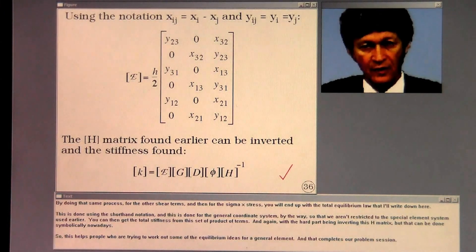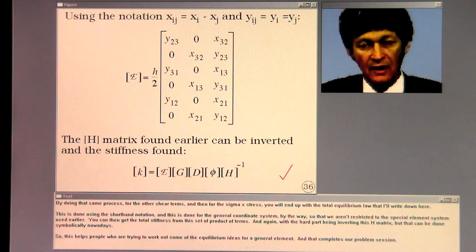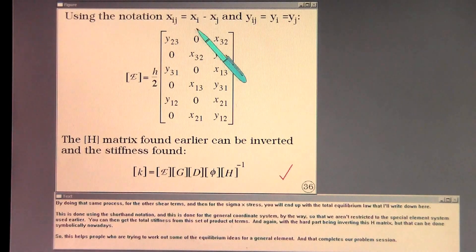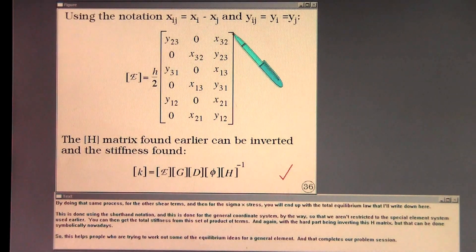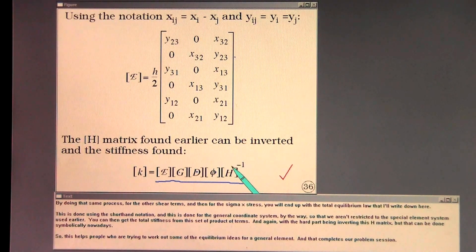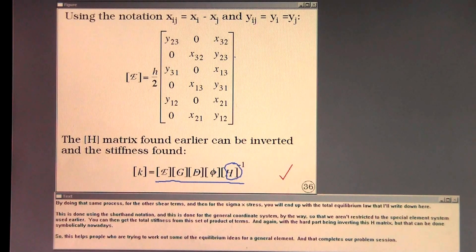By doing that same process for the other shear terms and then for the sigma x stress, you will end up with the total equilibrium law written down here. This is done using shorthand notation and for the general coordinate system, so that we aren't restricted to the special element system used earlier. You can then get the total stiffness from this set of product of terms, with the hard part being inverting this H matrix — but that can be done symbolically nowadays. This helps people working out equilibrium ideas for a general element, and that completes our problem session.